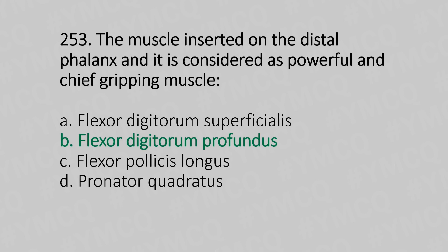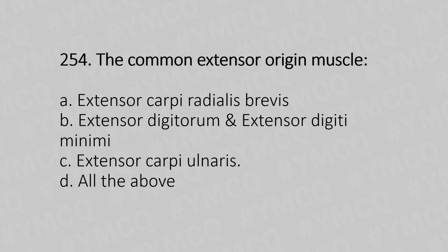Question 254: The common extensor origin muscles are — Option A: extensor carpi radialis. Option B: extensor digitorum and extensor digiti minimi. Option C: extensor carpi ulnaris. Option D: all of the above. The answer is Option D, all of the above.